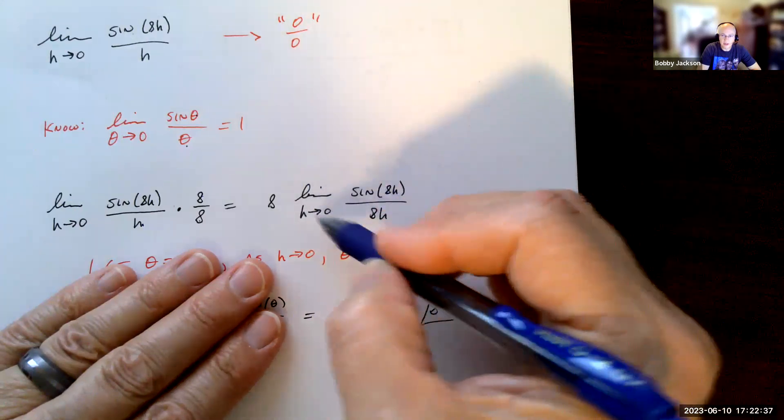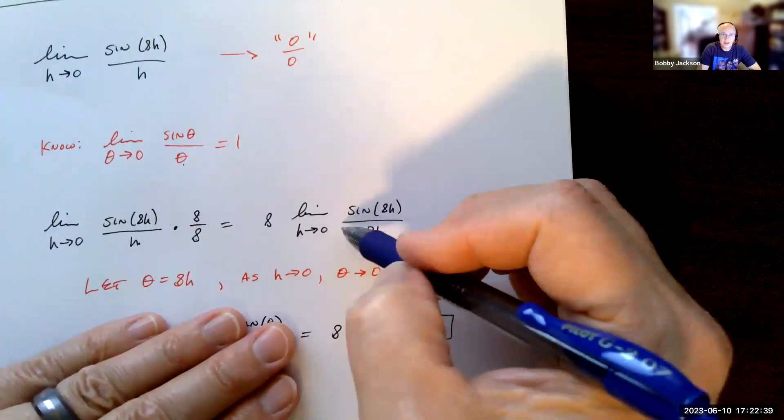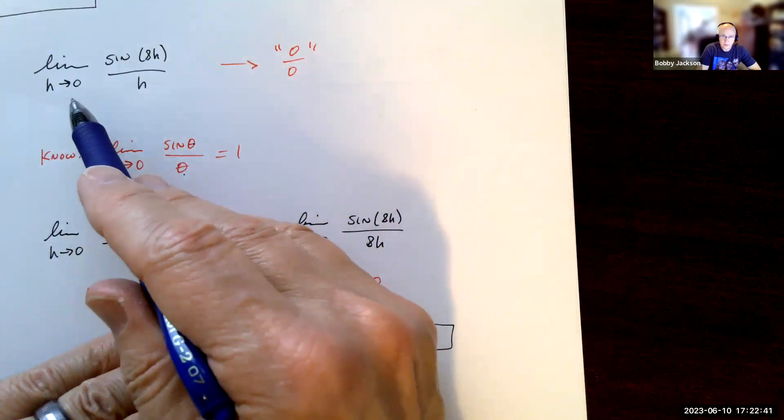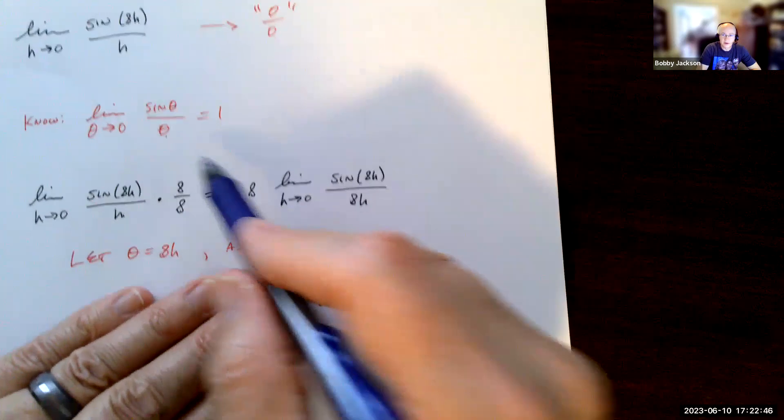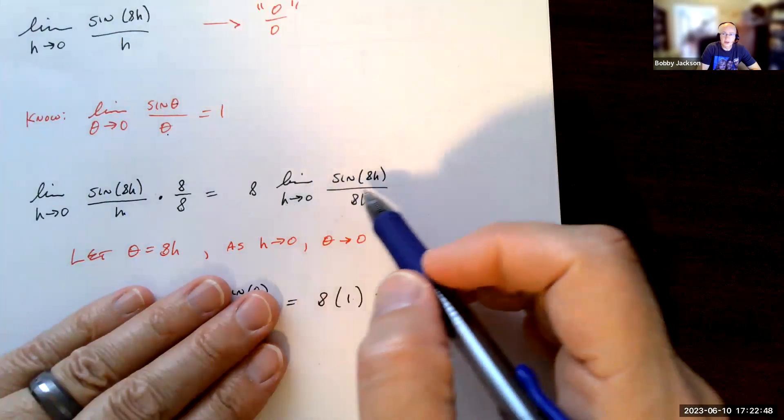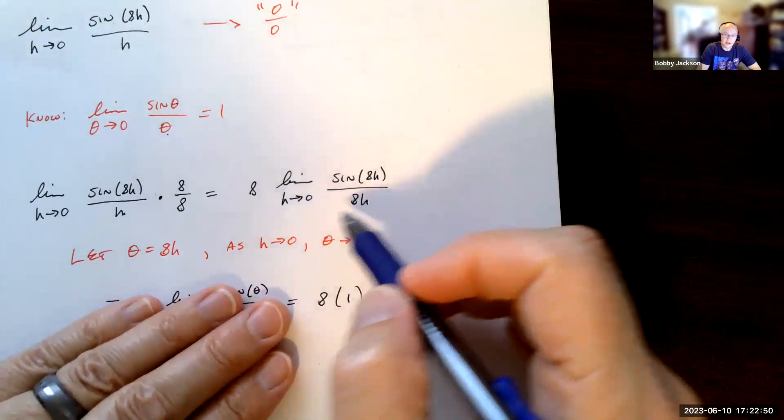Now you'll notice the original is the limit as theta goes to 0, sine of theta over theta. This is h goes to 0, sine of 8h over 8h. Well, as h goes to 0, 8h goes to 0.